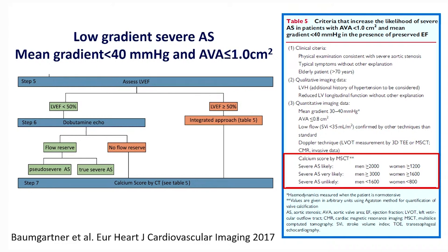If the aortic valve area is reduced and the mean gradient is high, it is probably severe aortic stenosis. If there is a low gradient, you need to assess the ejection fraction. If it is less than 50 percent, you proceed to dobutamine stress echo to see whether there is flow reserve. If there is no flow reserve, you assess the calcium score by CT of the aortic valve, and if the value meets the cut-off, the patient likely has severe aortic stenosis.